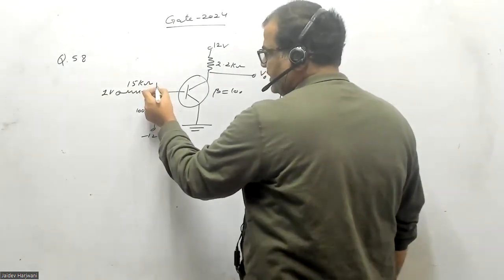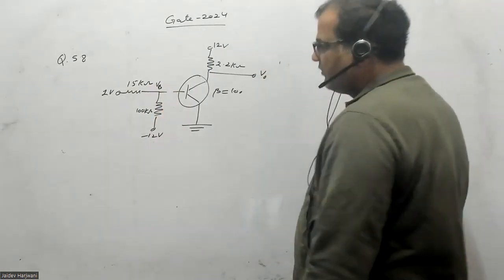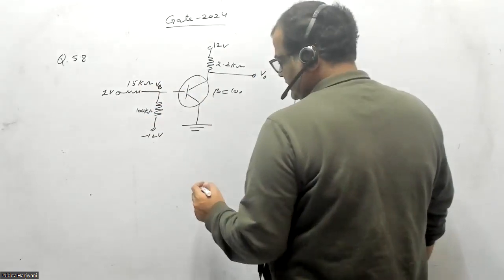Let us find out what is the voltage here, VB. I am making this as open circuit and trying to find an equivalent of this circuit. So what is the voltage VB here?